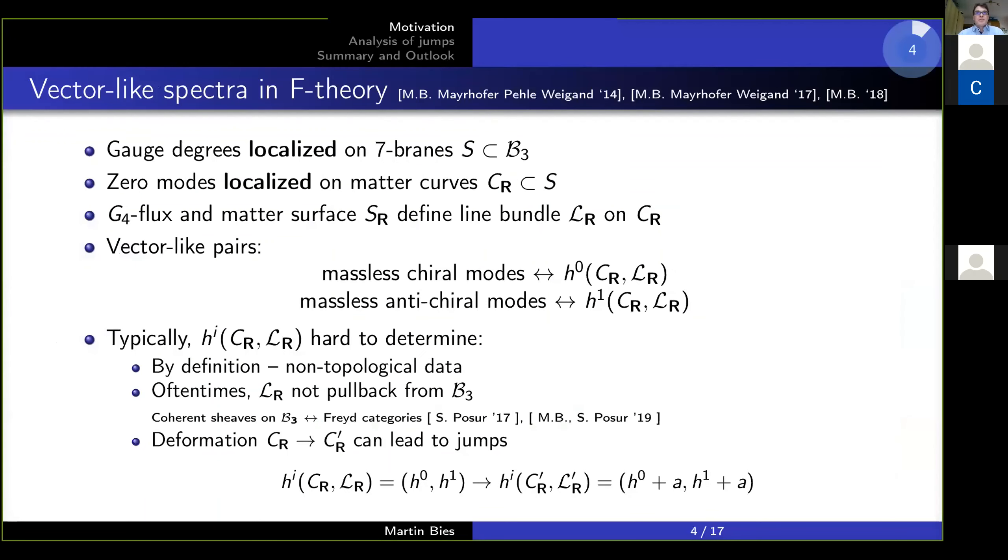So, brief revision on vector-like spectra in F-theory. For the time being, I simply consider F-theory as similar to type 2B. So as in type 2B, we have gauge degrees localized on seven-brane loci or on surfaces here in F-theory, the zero-modes localized on curves, which we call matter curves. In type 2B, that would be intersections of seven branes.